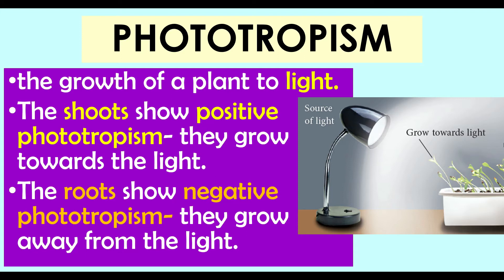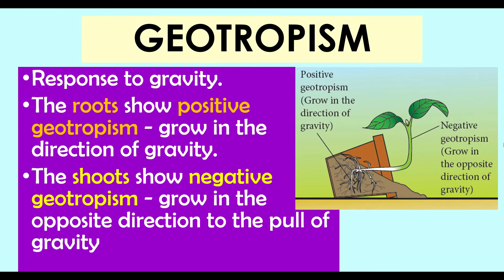The second is geotropism — the response of plants towards gravity. Roots show positive geotropism, growing downward in the direction of gravity, allowing them to grow deep into the ground to grip and stabilize the plant. Shoots, on the other hand, show negative geotropism — growing upward in the opposite direction of gravity — allowing leaves to obtain sunlight for photosynthesis.